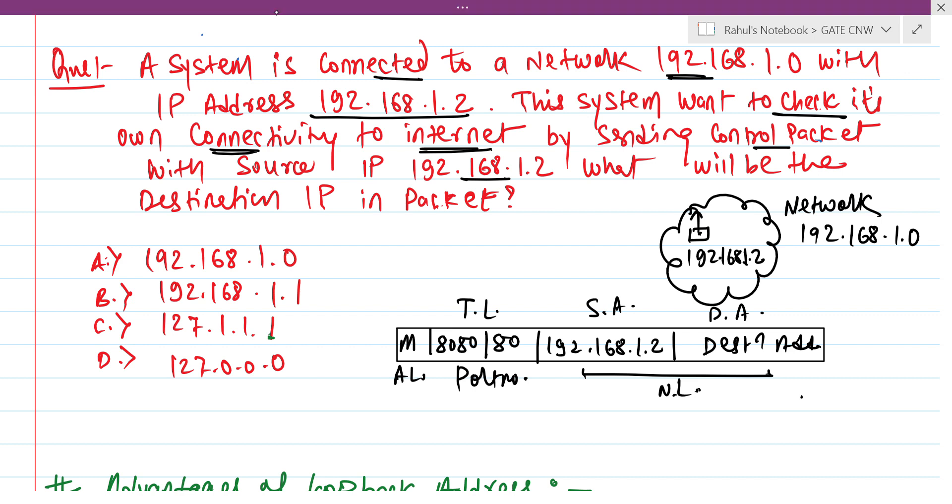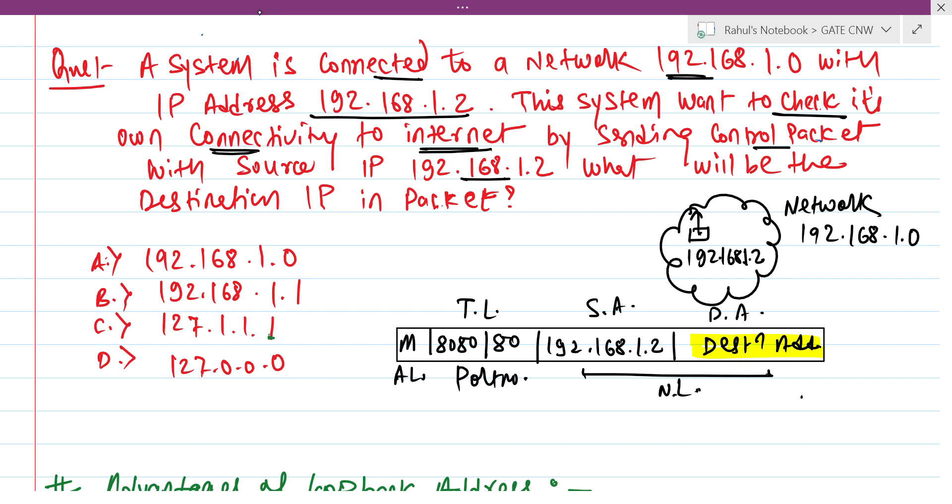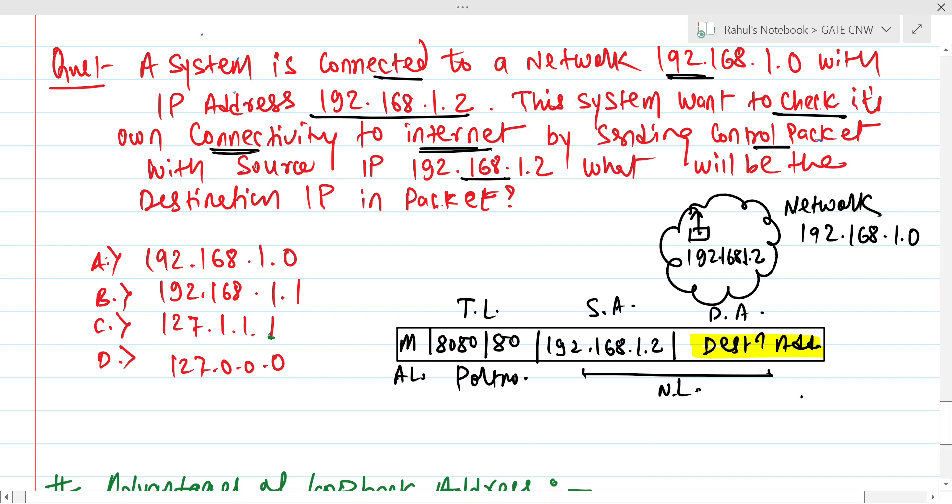Now the concept here is: what should be the destination address so that we can check whether this device is successfully connected to internet or not? For self testing purposes, there is a concept called loopback testing, done with the help of series 127.